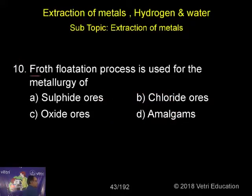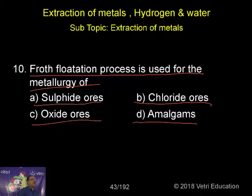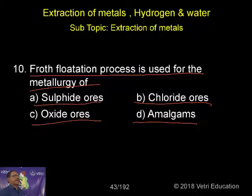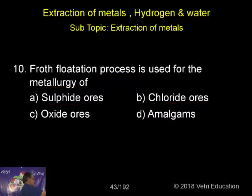Question number 10: Froth flotation process is used for metallurgy of which type of ores — sulfide ores, chloride ores, oxide ores, or amalgams? There are five steps in metallurgy; the first step is converting ore into ground ore, and during concentration, depending upon the nature of the ore, we use different methods. For all sulfide ores, we use the froth flotation process.